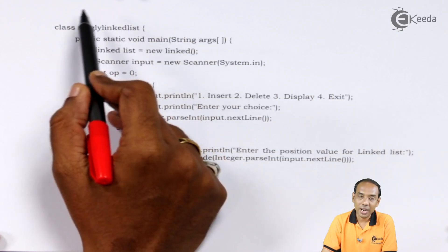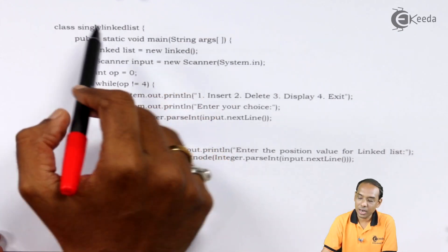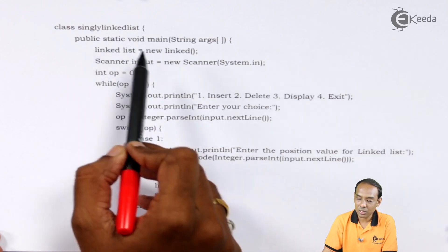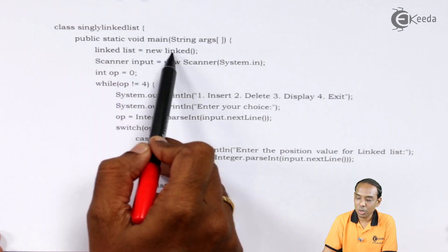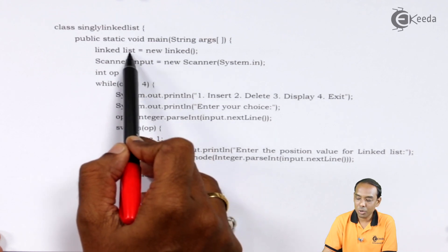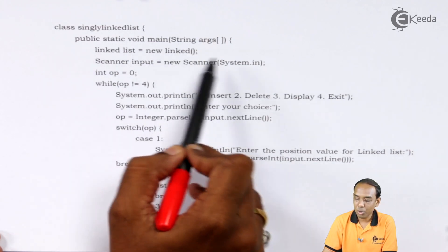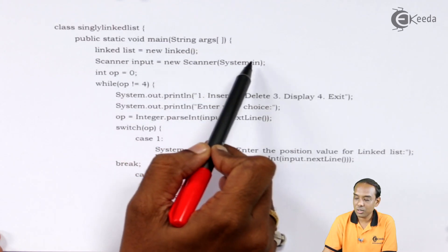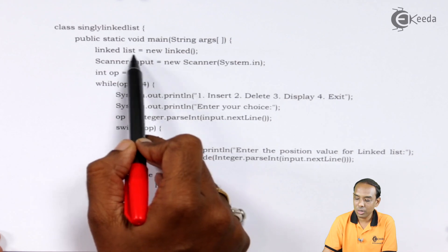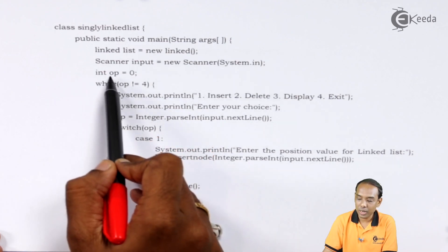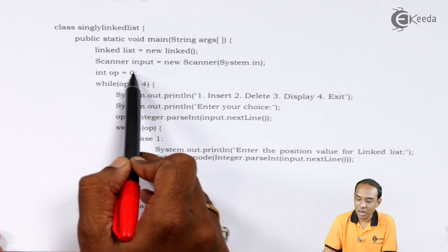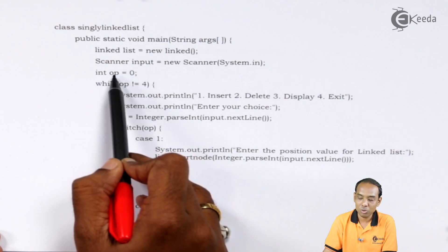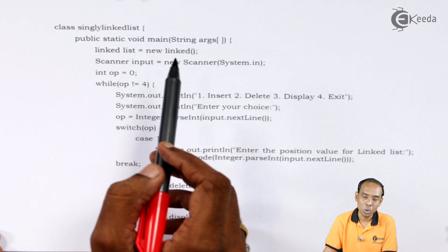To summarize the entire function, I have created a class called SyncLinkList. In that I have created an object of linked list class: linked list equal to new linked list. Using this I am going to create the object of linked list. Then I am going to take input from the user using scanner: scanner input equal to new scanner system dot in. The values are going to be stored in input. Then I am going to take a variable called op with value 0, which is going to store which kind of operation I need to do.